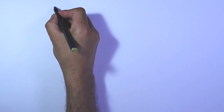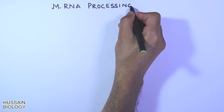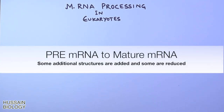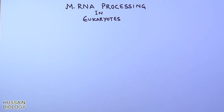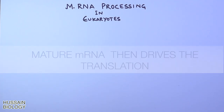In this video we will be discussing the overview of mRNA processing in eukaryotes. In mRNA processing, the nascent mRNA which is being transcribed is simultaneously processed, in which some additional molecular structures are added and some sequences are removed from the pre-mRNA, so that we ultimately get the mature mRNA which can later be used in the translation process.